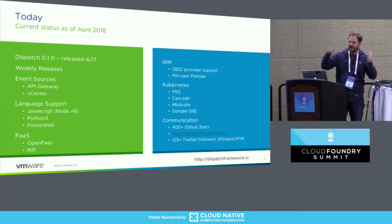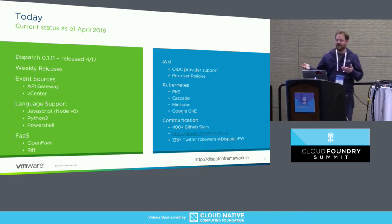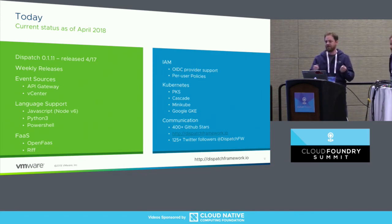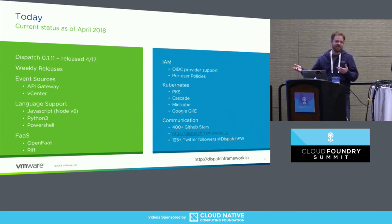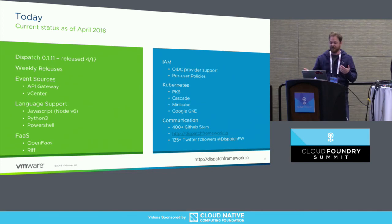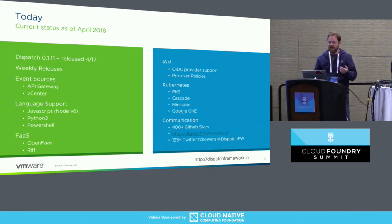We just added the service integration to Dispatch. We're still a pretty early-stage project — we just released our 0.1.11 release and we are releasing weekly. Currently we have event sources from the API gateway and vCenter, and soon we'll have public cloud. We have language support for JavaScript, Python 3, PowerShell, and as of today possibly Java and Clojure as well. We support OpenFaaS and Riff, and that list might expand. We've got IAM support with per-user policies. We run on effectively any Kubernetes. You can see us at dispatchframework.io and on Twitter.